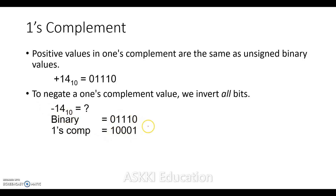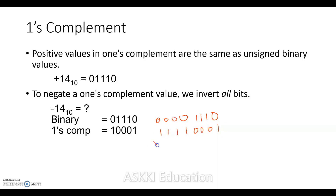So the one's complement of -14 when represented in 5 bits: the binary value is 01110, and inverting all bits gives 10001. For 8-bit representation, we first represent +14 in 8 bits, then invert all bits to get the one's complement notation for -14.